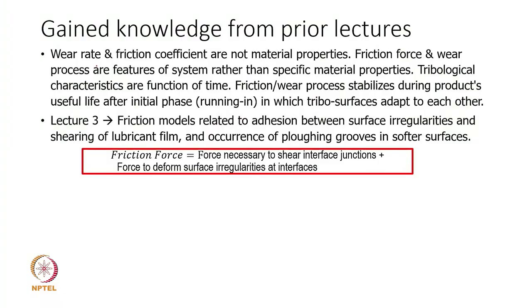What we have already understood is that wear rate and friction coefficient are not material properties. Many books define coefficient of friction and wear rate as material properties, but we have learned that is not the case. Friction and wear are features of the system rather than a specific material, so we need to consider the system, not just the material. Material may play a role, but other parameters must also be considered.